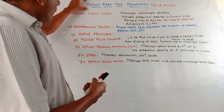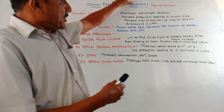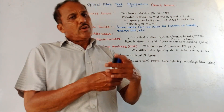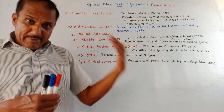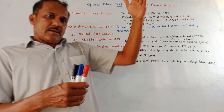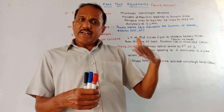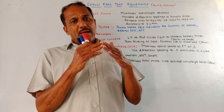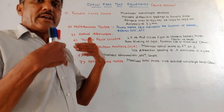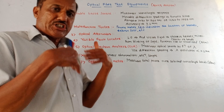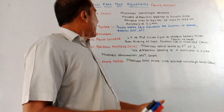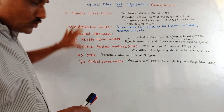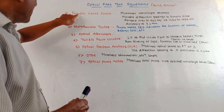First, optical fiber test equipment. From the exam point of view, the question may be like: list out and explain different optical fiber measuring instruments or different test equipments. So this is the list of all test equipments.